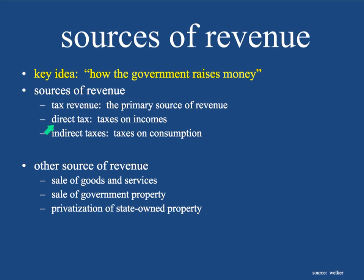Direct taxes are taxes on incomes — that can mean income of a household or income of a firm. They're usually progressive in nature, meaning the more you earn, the more percentage tax you pay. The other way is an indirect tax, which is taxes on consumption. These are almost always paid by the firm themselves. For example, here in Chile, there's a 19% value-added tax. If you buy something for 10,000 pesos, 1,900 pesos is taxed, and at the end of the month the grocery store sends that 1,900 pesos to the government.